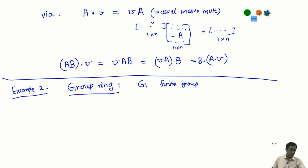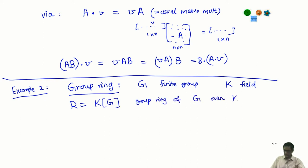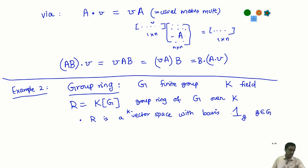The group ring of G over the field K, denoted K[G], is firstly a K-vector space with basis given by elements 1_g as g runs over G. So a typical element of R looks like Σ a_g · 1_g. Addition is just componentwise: (Σ a_g · 1_g) + (Σ b_g · 1_g) = Σ (a_g + b_g) · 1_g.